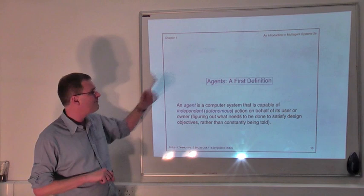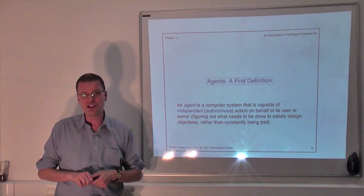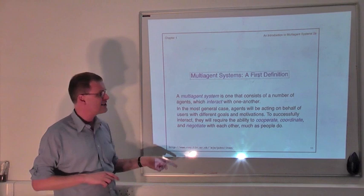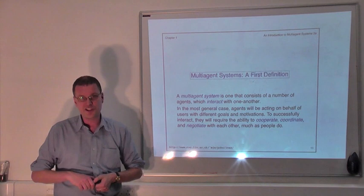So an agent, our first definition of an agent is just a semi-autonomous piece of software which acts on behalf of its owner or user that is figuring out how to satisfy its owner's or its user's goals or desires on their behalf. And a multi-agent system is where such agents are just interacting with one another. And the key issue there is that they require the ability to cooperate, coordinate and negotiate with other agents in order to achieve their delegated goals.